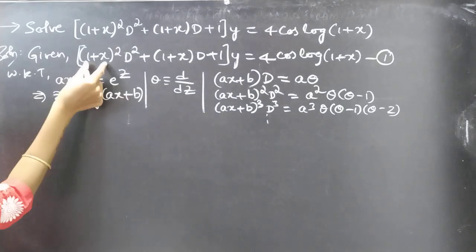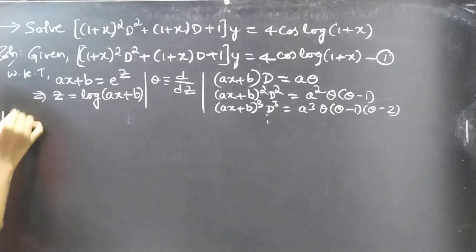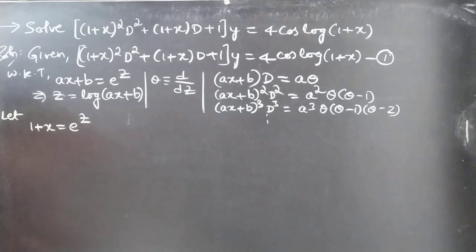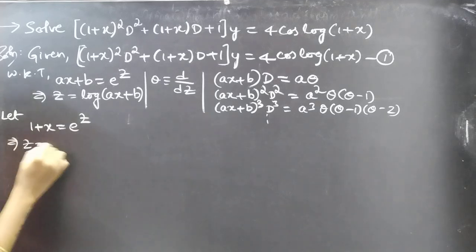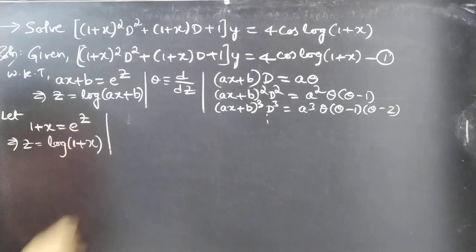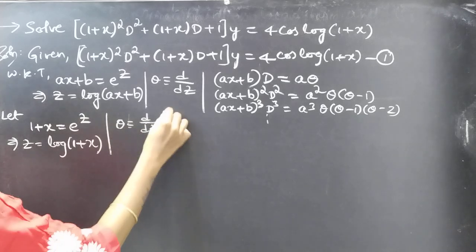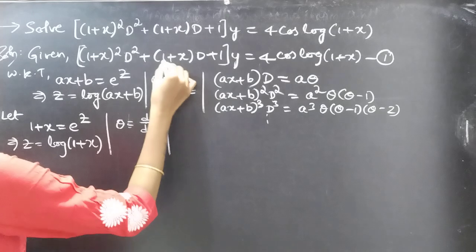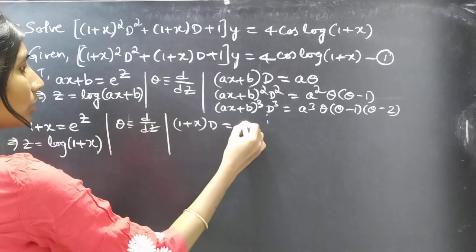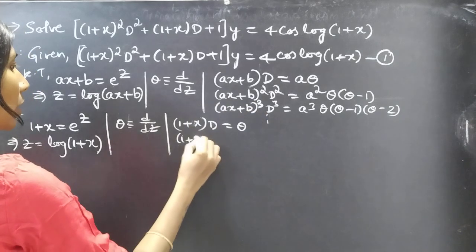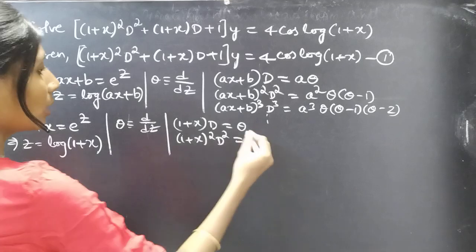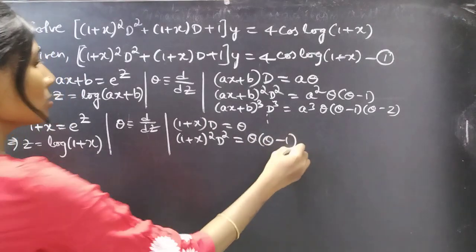Coming to our problem, let 1+x = e^z. Then z = log(1+x) and θ = d/dz. Now (1+x)·D can be replaced by 1·θ = θ, since the coefficient of x is 1. And (1+x)²·D² can be replaced by 1²·θ(θ−1) = θ(θ−1).